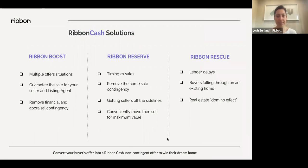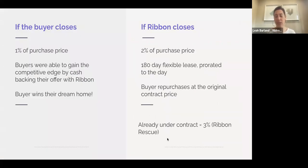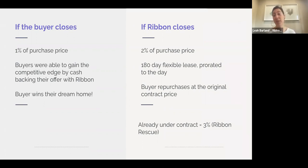The fee to use the service is 2% of the purchase price if Ribbon is purchasing the home. To make an offer with Ribbon, you need at least 2% down in earnest money, seller-paid closing costs, or a combination of both. We don't collect our fee until closing, but we need to know upfront that the funds are in the contract. If Ribbon doesn't end up having to purchase the home, it's 1% of the purchase price — that 1% pays for the ability to upgrade the offer and provide the guarantee.